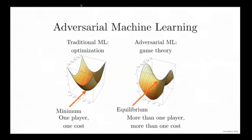The basic idea behind adversarial machine learning is that it extends machine learning from the situation where one player has one cost function representing their interests, and instead deals with more than one player with more than one cost function. On the left, I show you what the cost function looks like in a traditional machine learning algorithm. We have some kind of cost function that takes a player's parameters and describes how well that player performs. Higher cost means worse performance — so this might be something like the negative log likelihood assigned to the labels on a training data set.